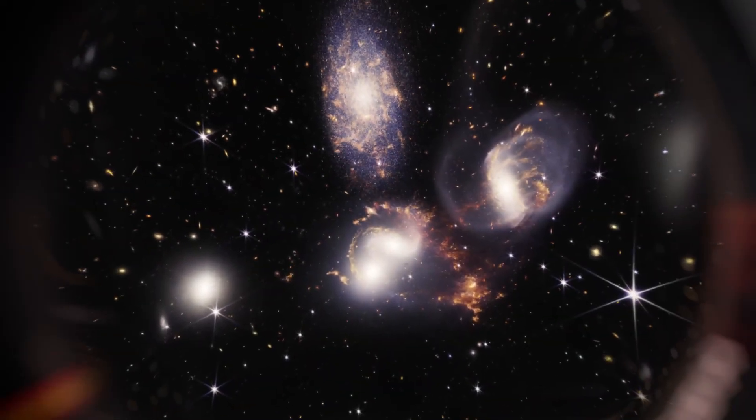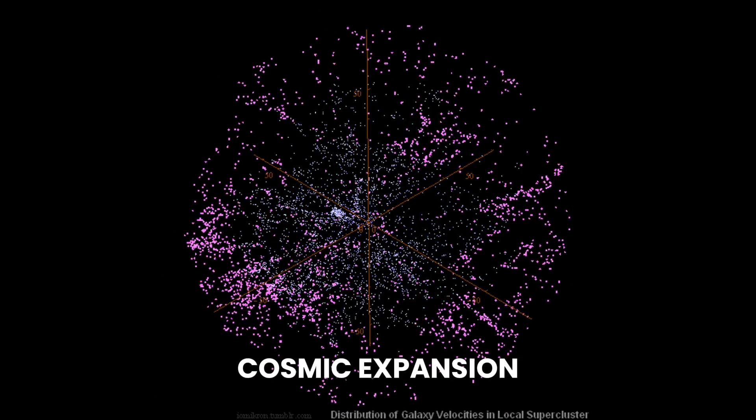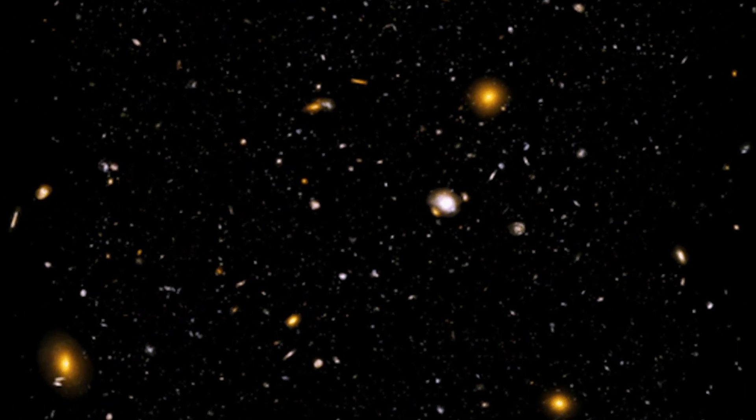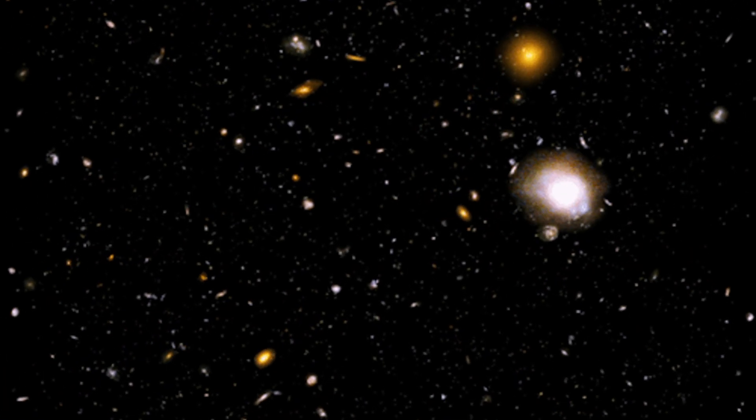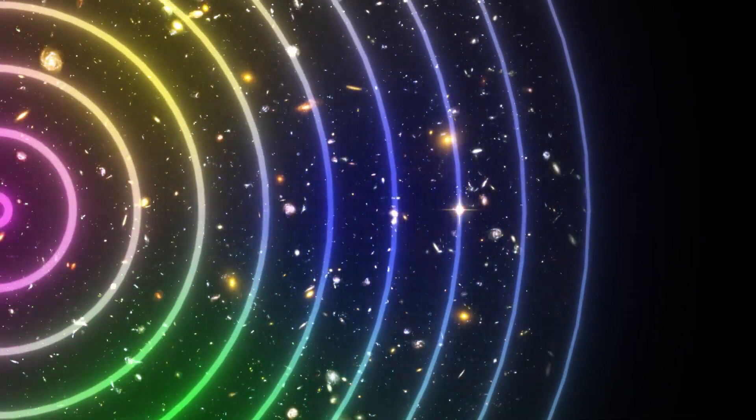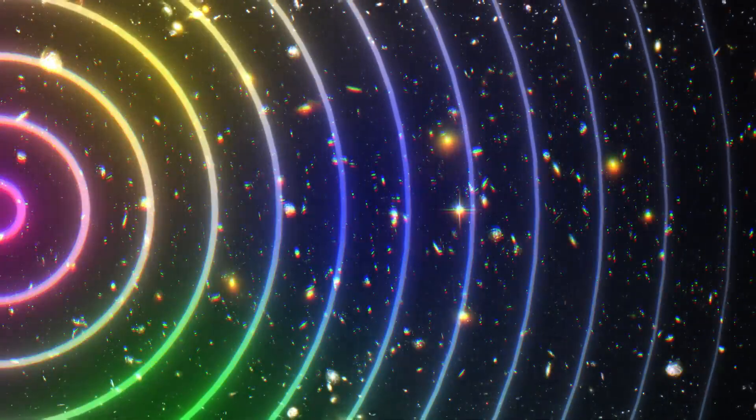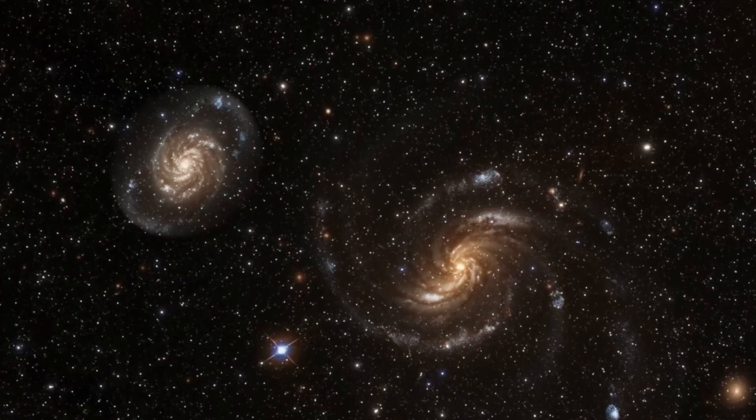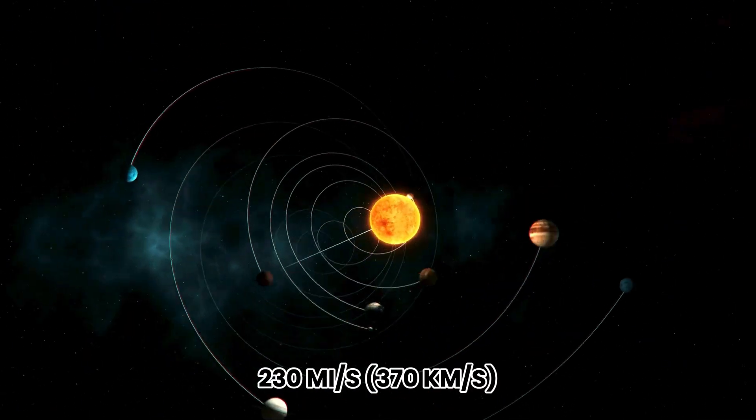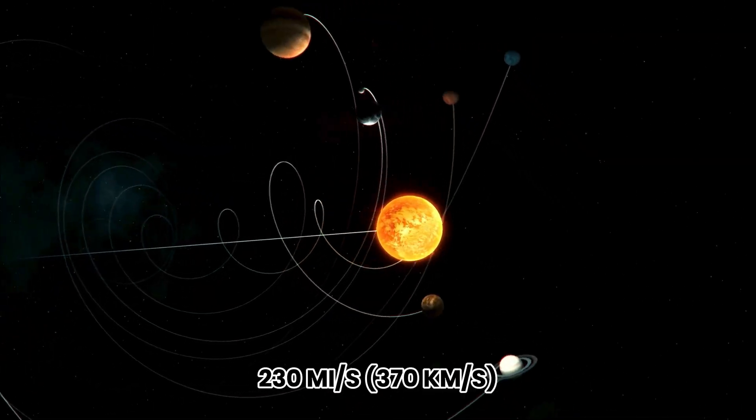Underneath all of this runs a deeper current, cosmic expansion. Space itself is stretching, and the rate is accelerating, driven by the mysterious dark energy. Even amid that expansion, we can define a kind of rest frame using the cosmic microwave background, the Big Bang's afterglow. Against that backdrop, the solar system is cruising at about 230 miles per second, 370 kilometers per second.